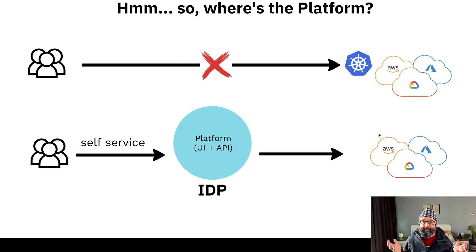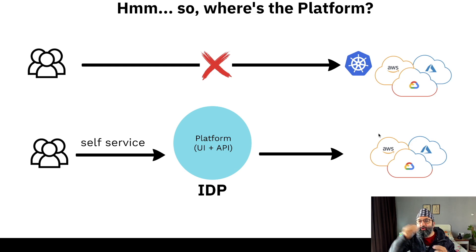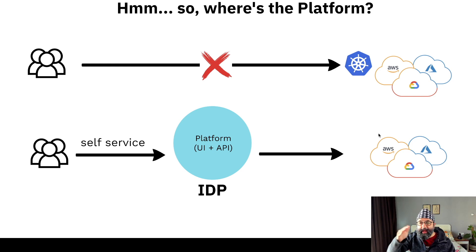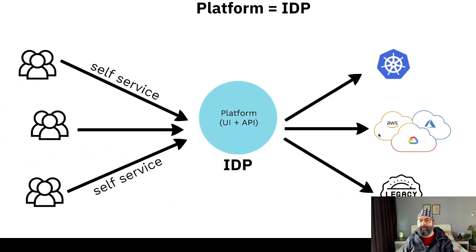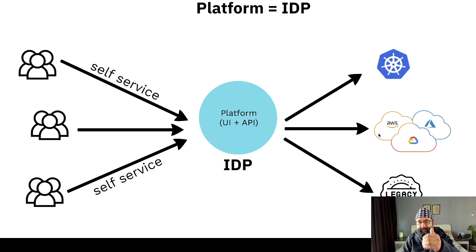Where does the platform fit in all of this? If engineers need a new cluster, they don't go directly to Kubernetes and create one on AWS or Azure. Instead, they use self-service — log on to the platform, use its UI or an API — and that automatically creates the pod on the cloud platform. The details are abstracted. This platform is called an IDP, an Internal Development Platform, which is self-service for users and abstracts configuration and implementation details while working with Kubernetes, legacy systems, and cloud systems.